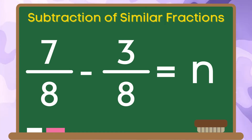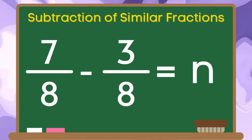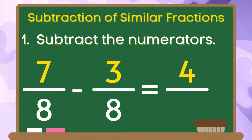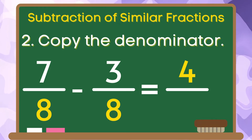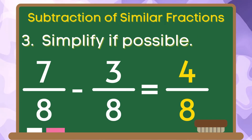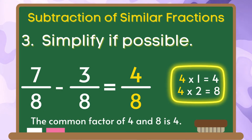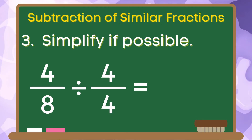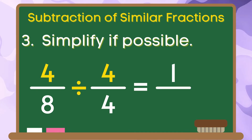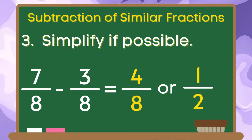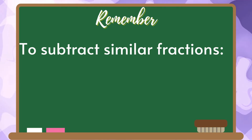For the final example, let us have seven-eighths minus three-eighths. Step one: seven minus three is equal to four. Step two, let us copy our denominator eight to our answer. And for the third step, let us simplify our answer if possible. The common factor of four and eight is four. We are going to divide our numerator and denominator by four. Four divided by four is one. Eight divided by four is two. Therefore, the simplest form of four-eighths is one-half. Always remember the steps in subtracting similar fractions.